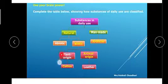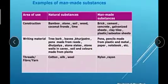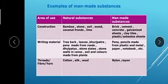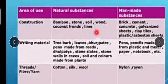Here are some examples of man-made substances. Area of use is construction. Natural substances are bamboo, stone, soil, wood, coconut, palm leaves. And man-made substances are brick, cement, concrete, galvanized sheets, clay tiles, plastic, asbestos sheets.